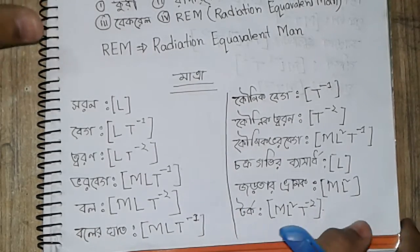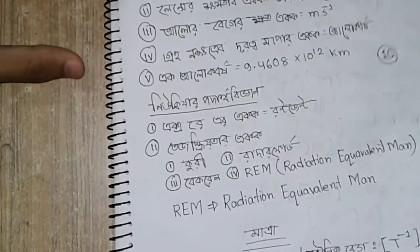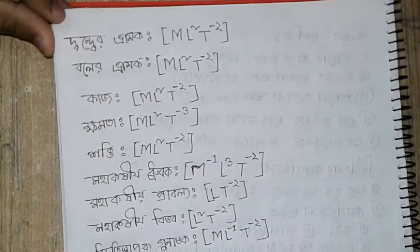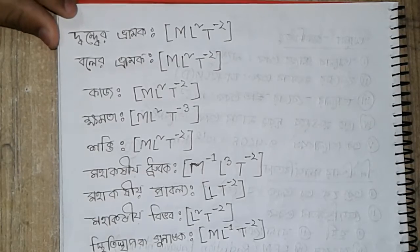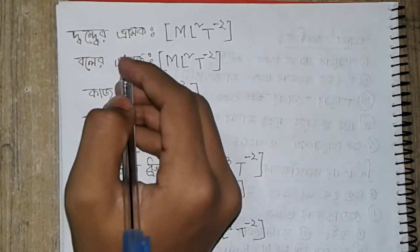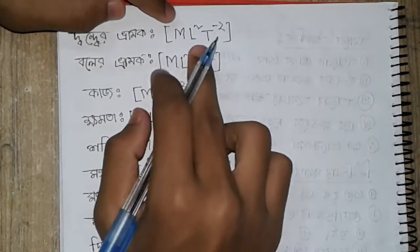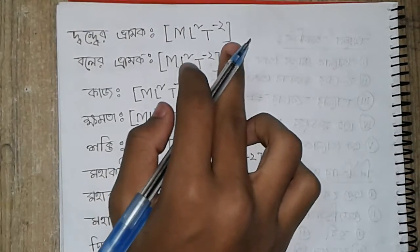Next, starting with another question. The dimensional formula has ML square T inverse two, which is important to understand for this topic.